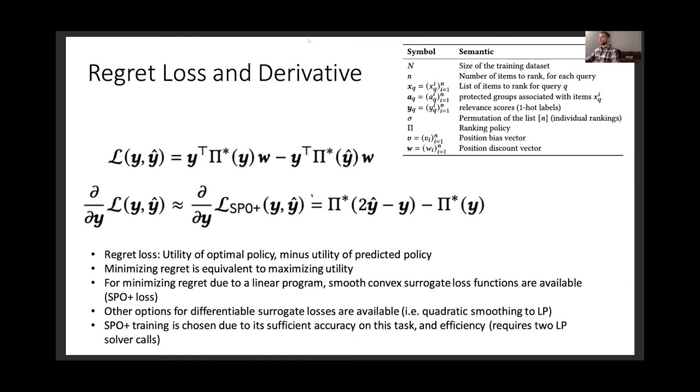Compared to another option, for example, quadratic smoothing, another way you can make a linear programming problem smooth is by smoothing it with a quadratic term. That requires you to solve now a quadratic programming problem, which is much less efficient.